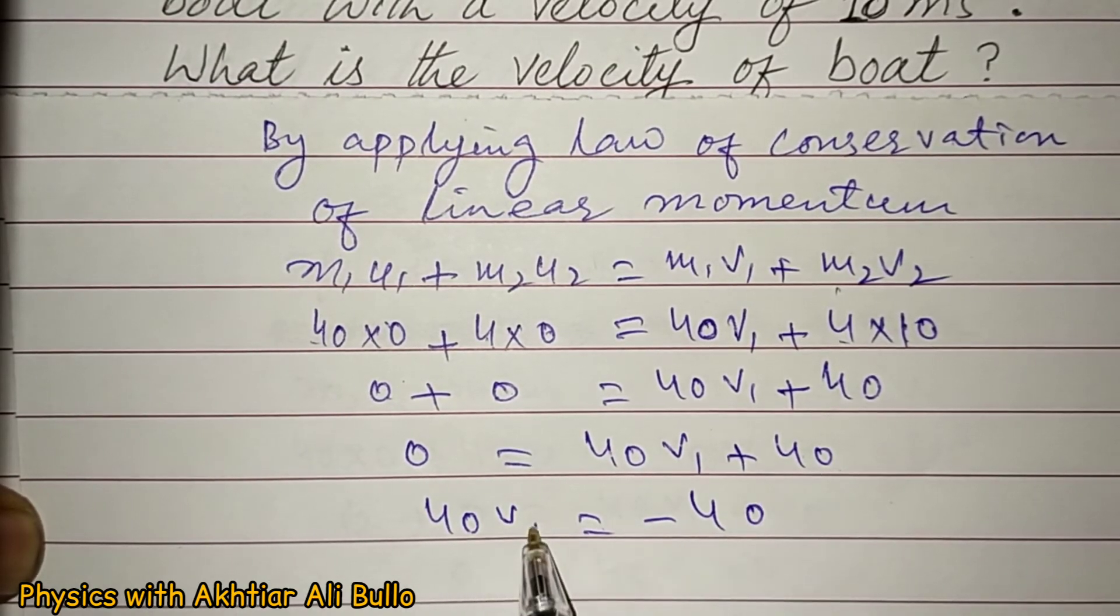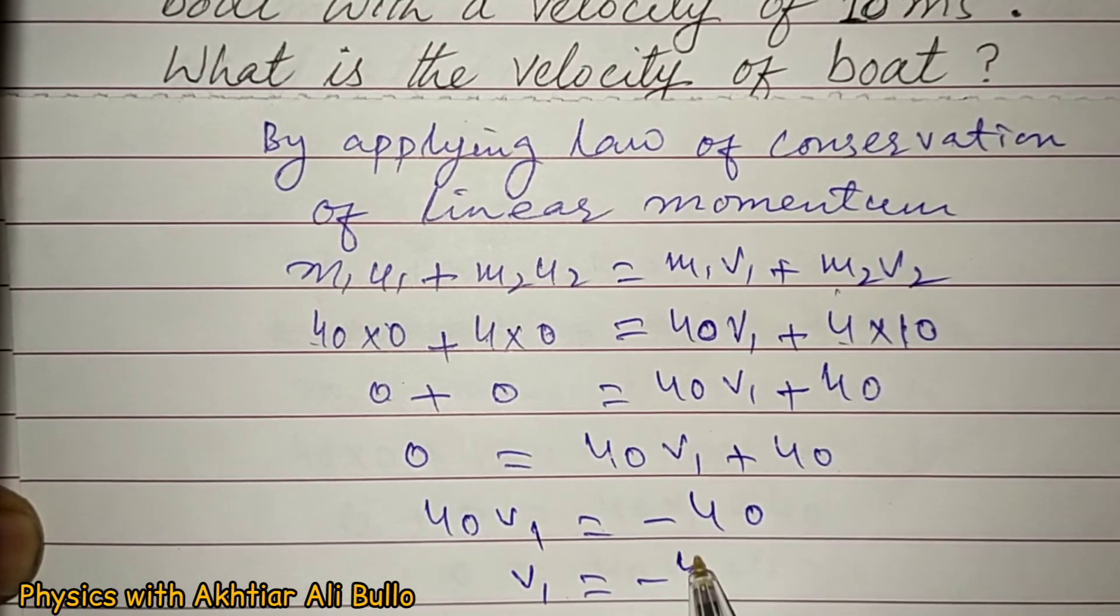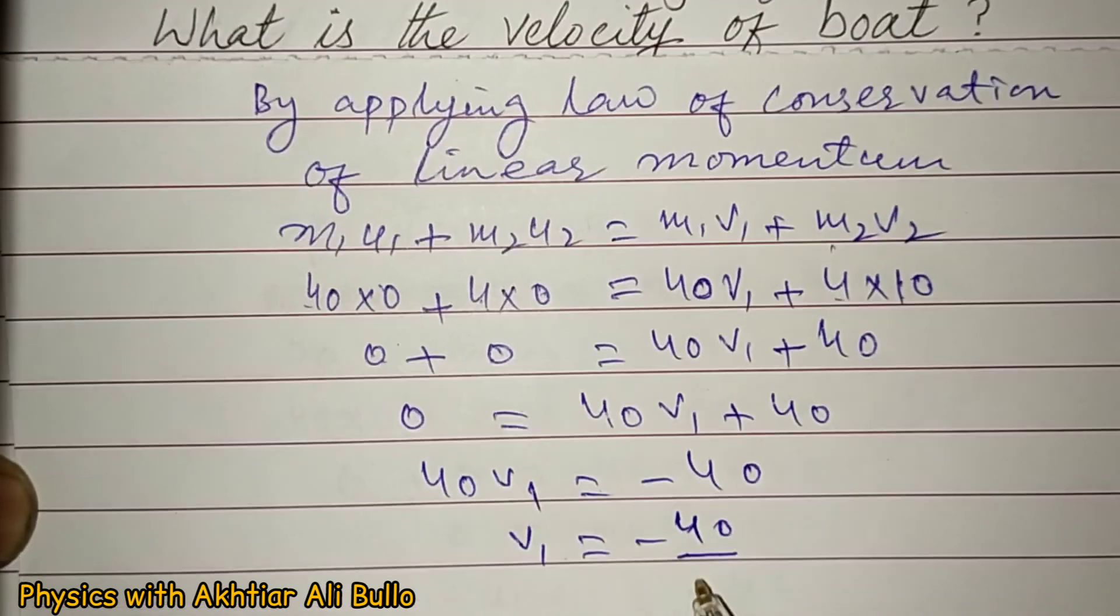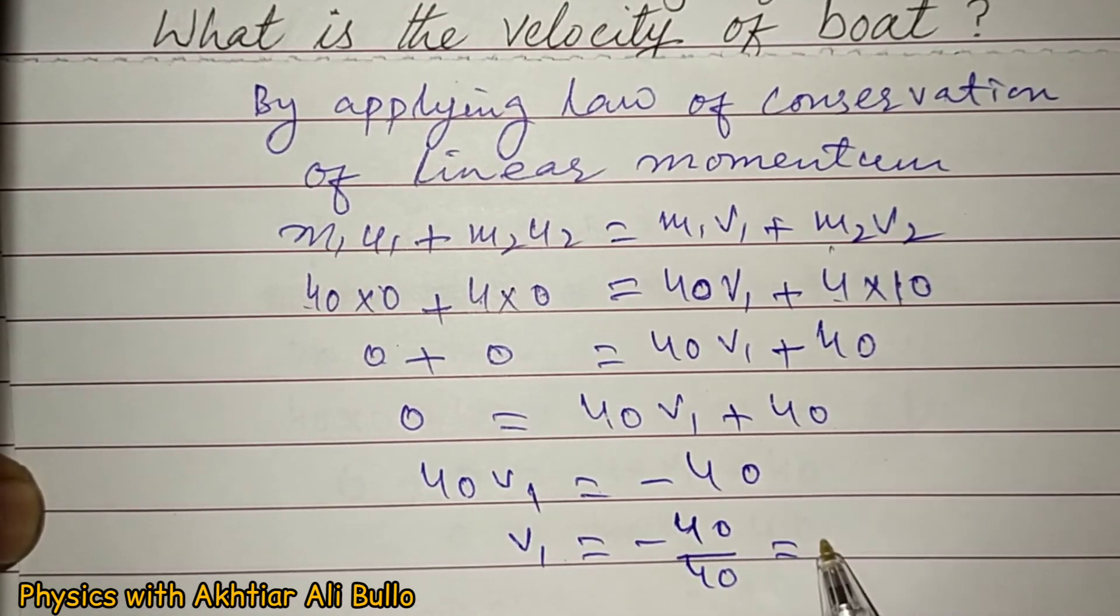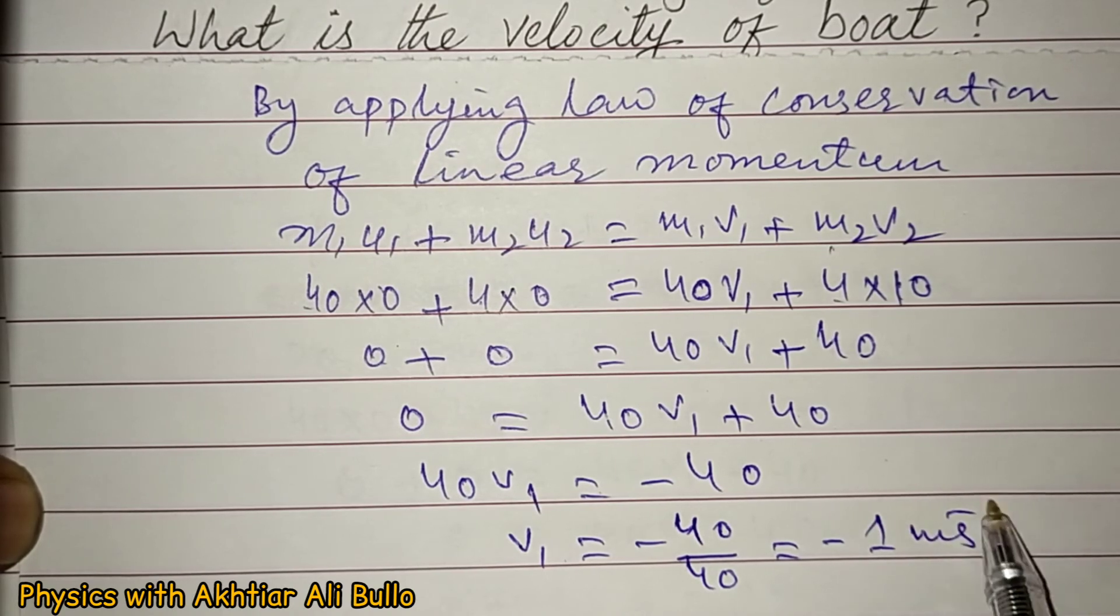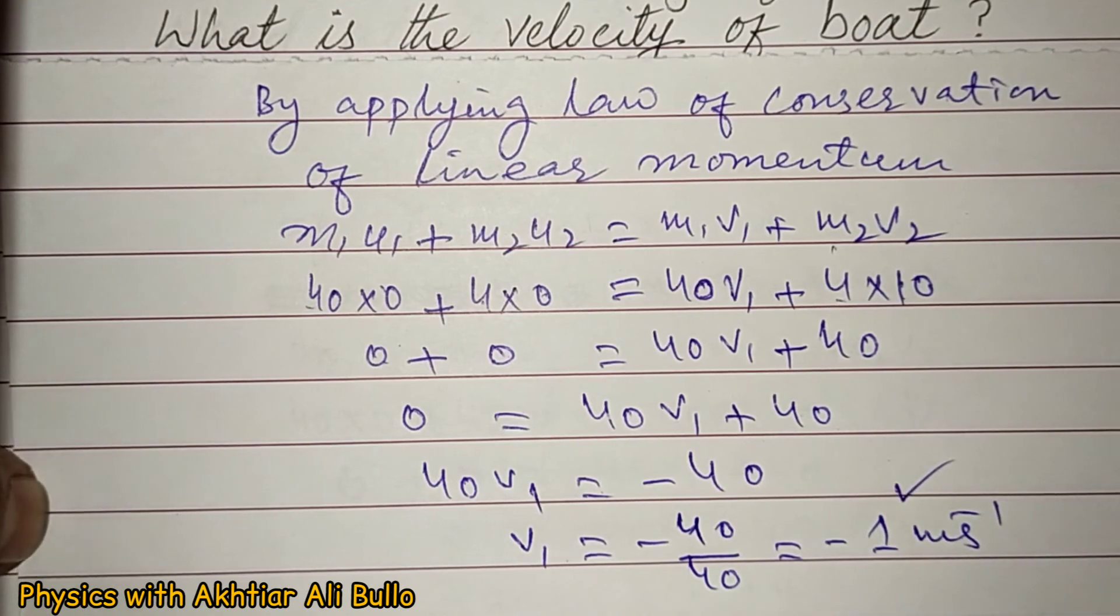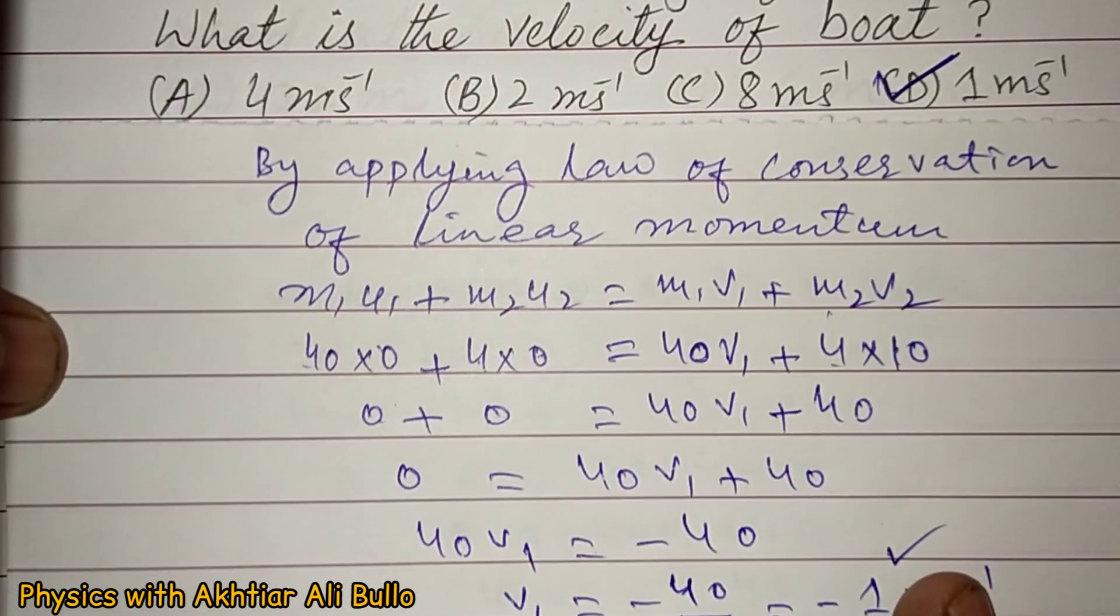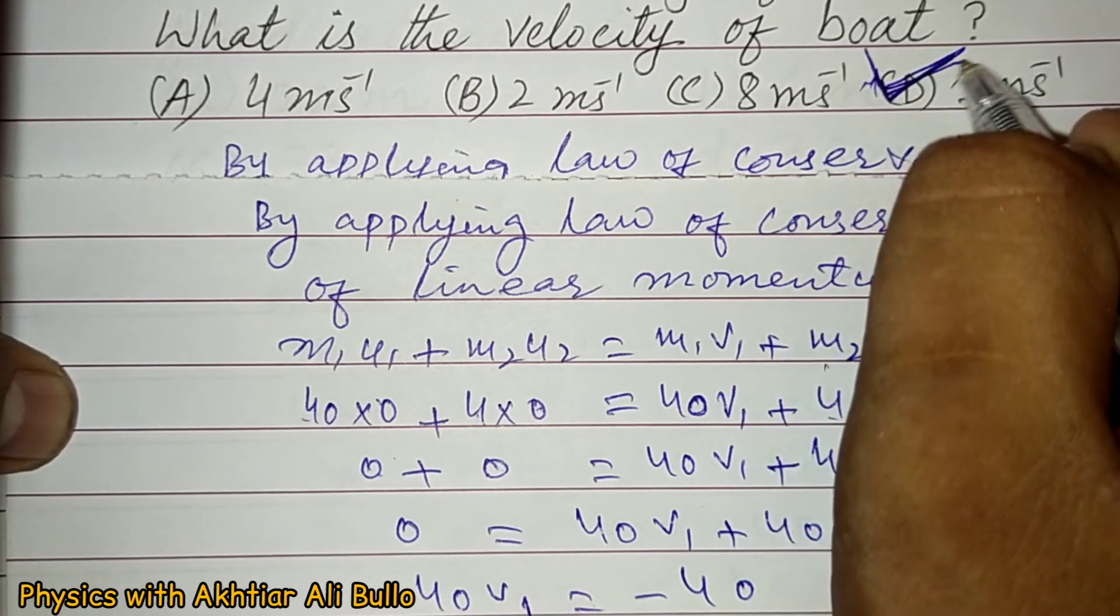So it will be obtained as minus 1 meter per second. The velocity of boat is obtained as 1 meter per second, so the correct option will be D, 1 meter per second.